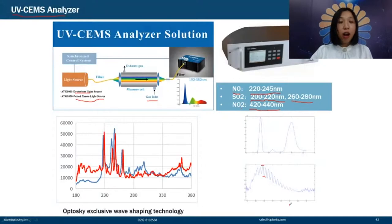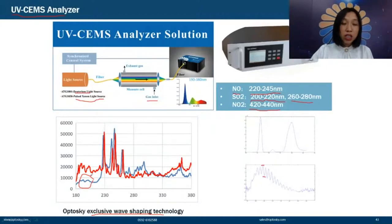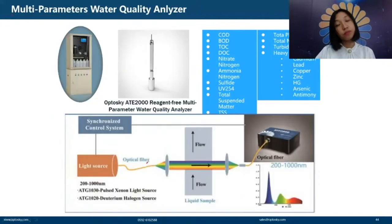Optosky provides exclusive wave-shaping technology: the original spectrum in UV range has very low intensity, but after reshaping, the intensity is higher and more uniform — making the spectrum look more elegant and easier to analyze.